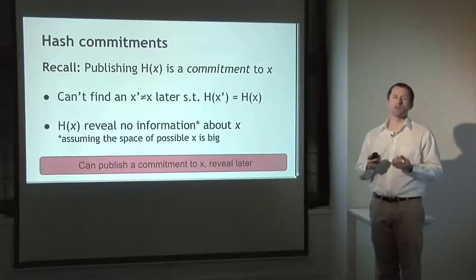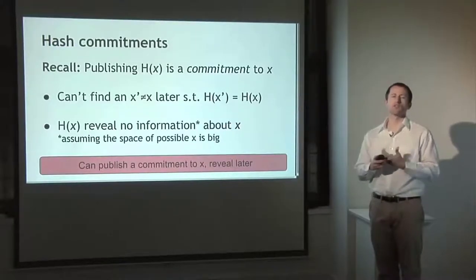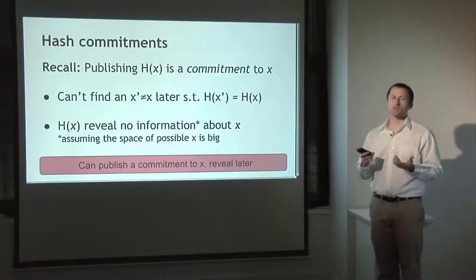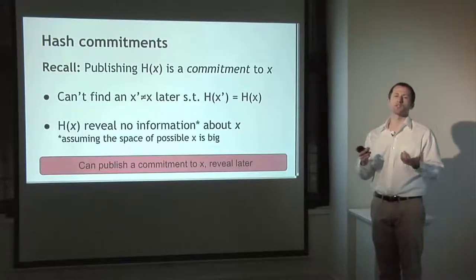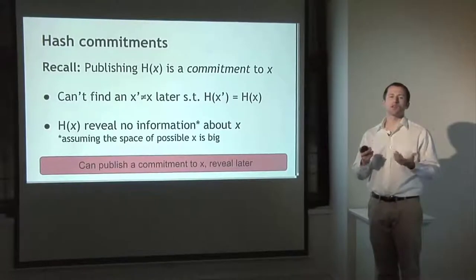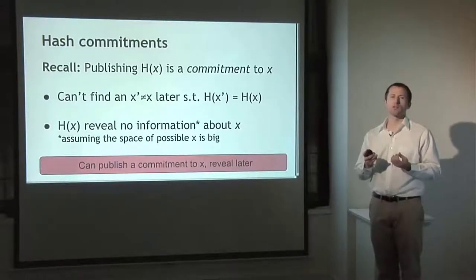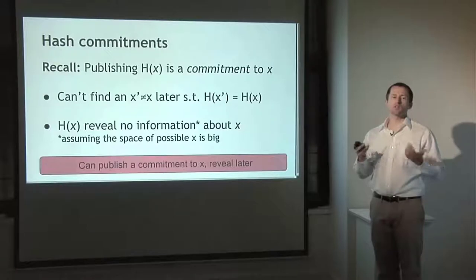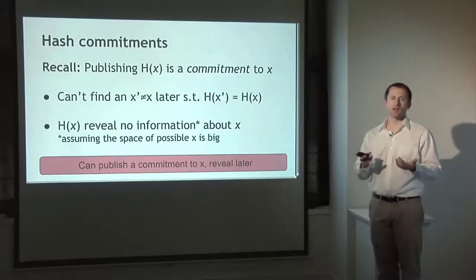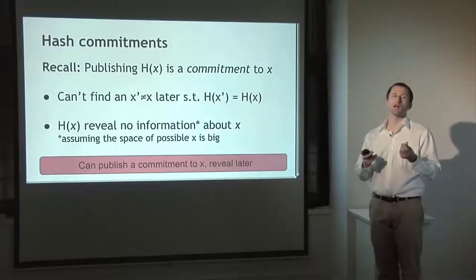The properties of the hash function guarantee that we can't later find some other value x' with the same hash value as x — that would be a break of the cryptographic properties. The hash of x also shouldn't reveal any information about x, with the caveat that this is only true if x comes from a large possible space; otherwise someone with the hash can simply try different potential values. The idea is that we publish a commitment — the hash of x — and later reveal x, proving we must have known it at the time we published the hash.